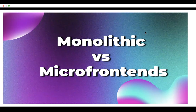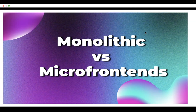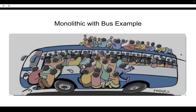With monolithic architecture, the back-end, front-end, and database — everything will be in a single place. That is monolithic architecture. It is good for small-scale applications and works fine. But over time, if you want to add many features into that system, it becomes overloaded. We can resemble monolithic architecture with the example of a bus.